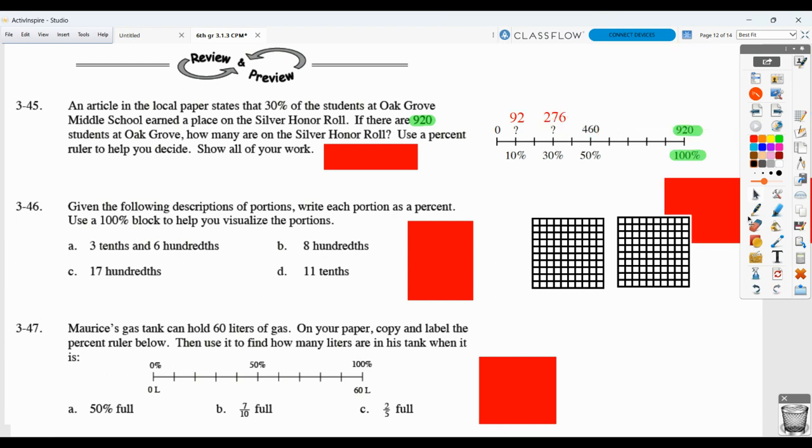So that would be a good way to show your work. Another way you can do it if they had not suggested you use the percent ruler is to say, what is 30% of 920? We could change 30% to a decimal. We know of means to multiply. And you could have taken then 0.30 times 920. That would give you the same answer.